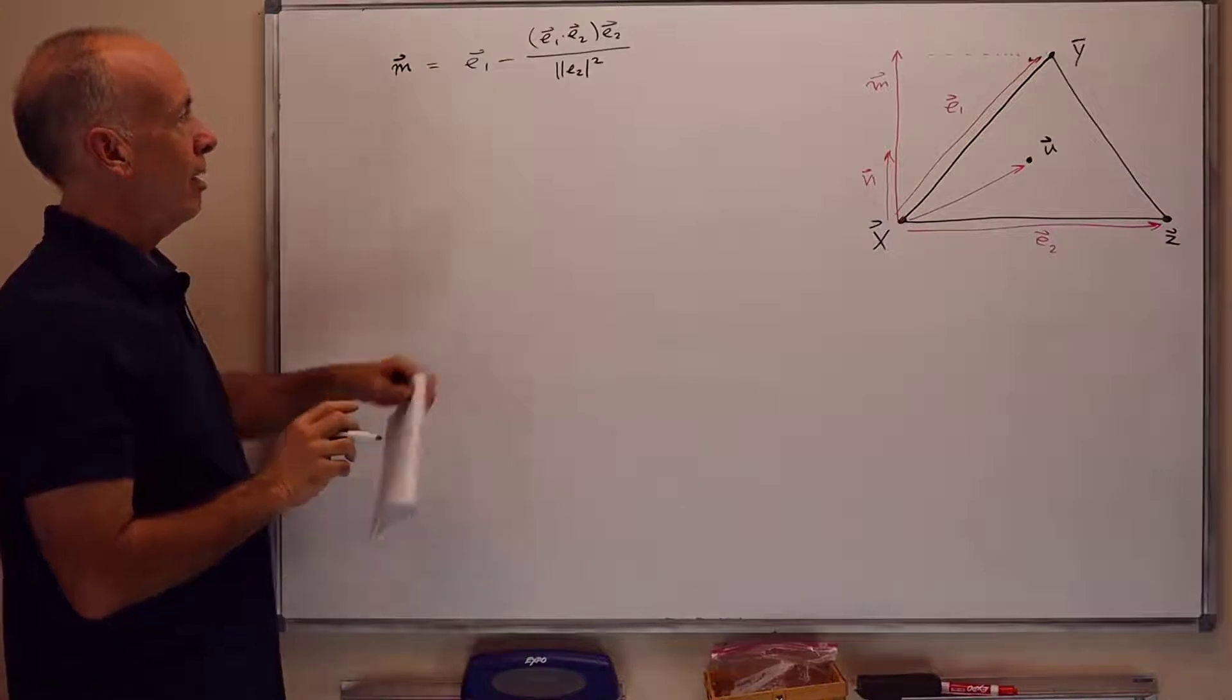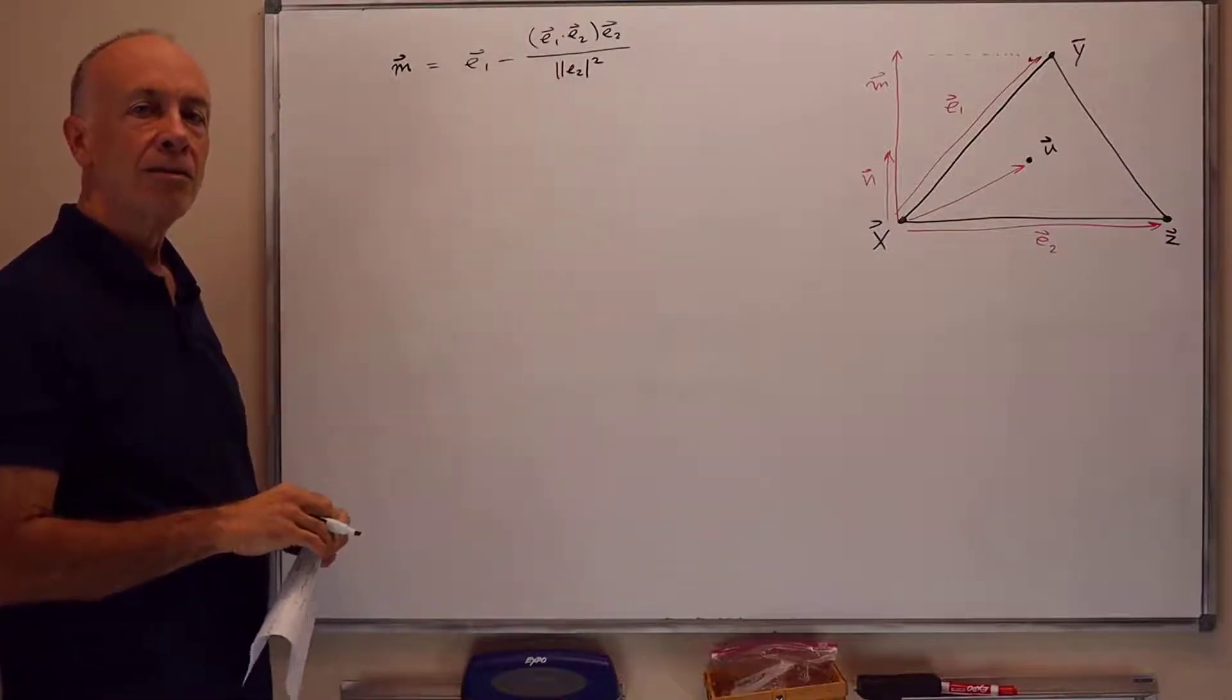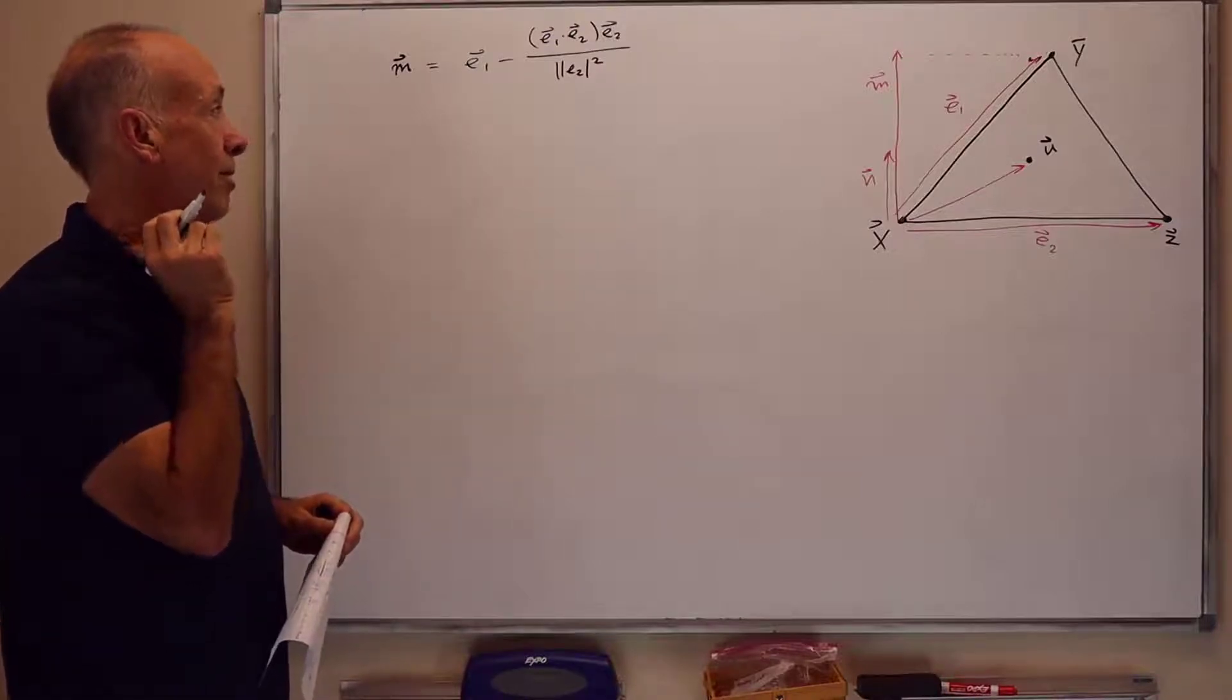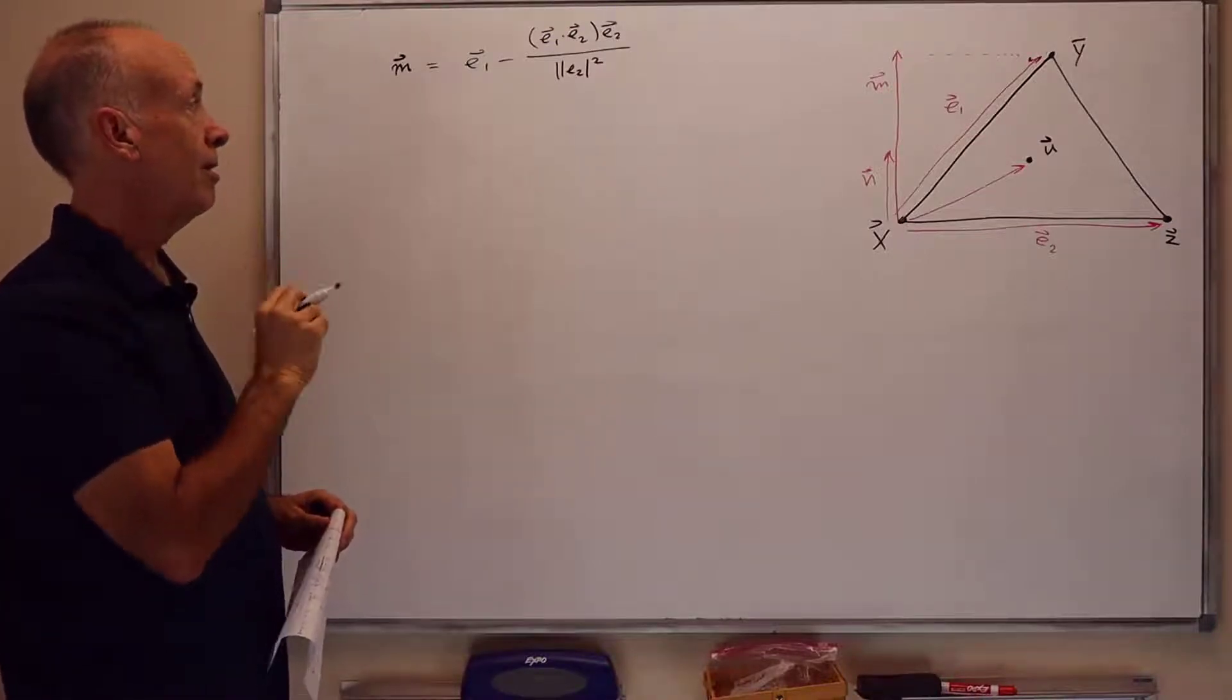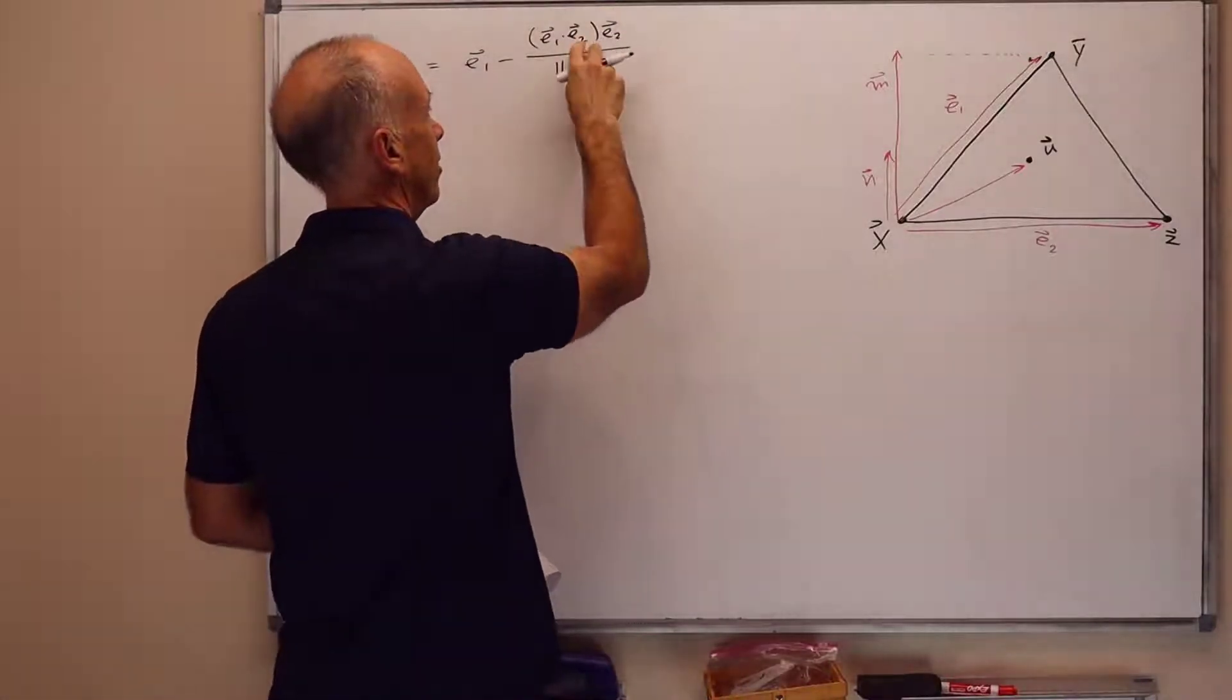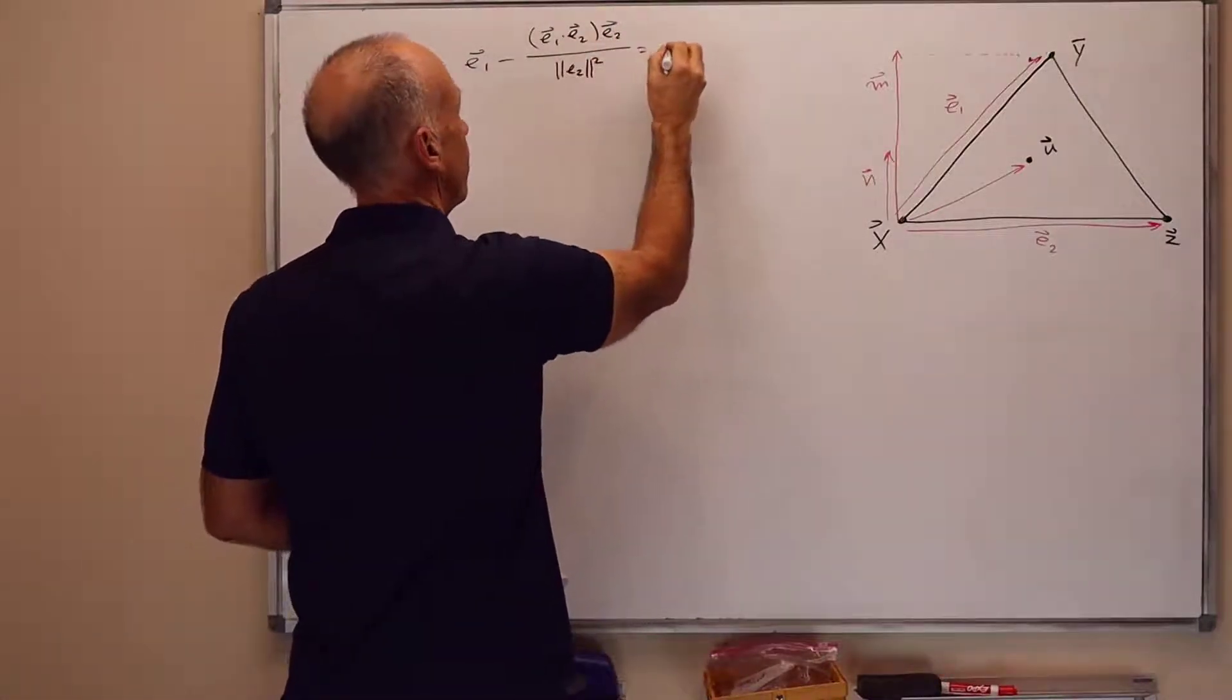Again, the numerator would be the correct formula for the component or the projection of e1 on e2. But if e2 is not a unit vector, we have to divide by its norm squared because there's two e2s in the top.